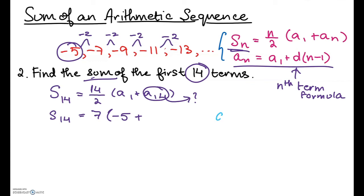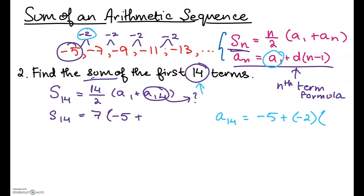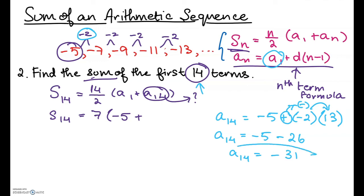To find a of 14: a of 14 equals a of 1 plus d times (n minus 1). A of 1 is -5, d is -2 (since we subtract 2 each time), and n is 14, so we compute -5 plus (-2 times 13), which is -5 plus (-26), which equals -5 minus 26, giving us -31. So our 14th term is -31.